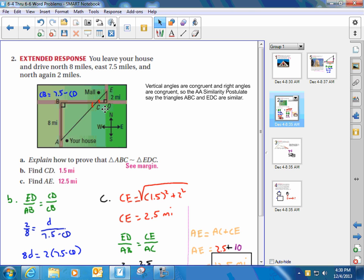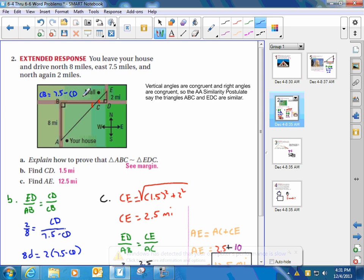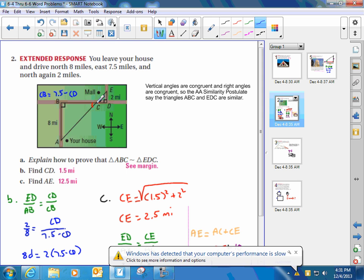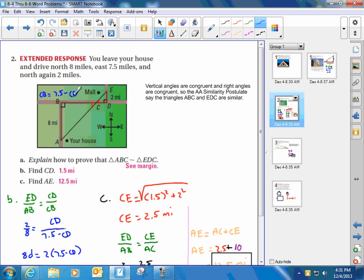So let's first start with finding CD. CD is an unknown length that corresponds with BC, and we know neither of them. But I could represent CD as X, some unknown length. So BC would be 7.5. Since BD is 7.5, BC would be 7.5 minus whatever the distance of CD is. When we see that, then we have a pair of corresponding sides where we're able to express them with a variable.